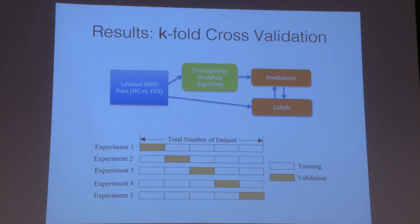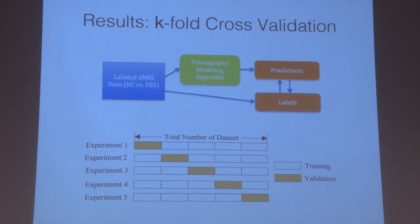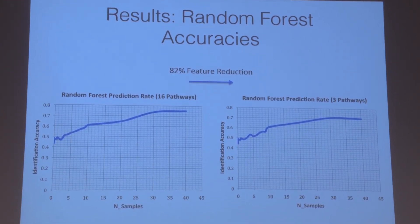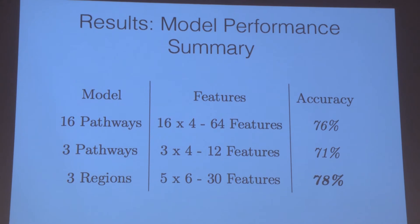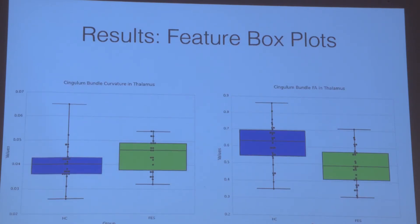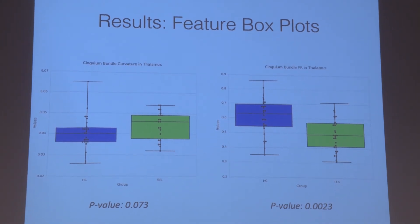To test model accuracy, we used K-fold cross-validation with 15 folds across 60 subjects. The random forest accuracy for the general 16-pathway model was 76%. After 82% feature reduction to the three key pathways, accuracy came to 71%. The model with the highest accuracy used the three discovered regions — right thalamus, right putamen, and right insula — achieving 78% diagnostic accuracy. This is state-of-the-art for pathway-by-pathway abnormality analysis. Feature box plots showed fractional anisotropy was statistically significant, while curvature requires further investigation.